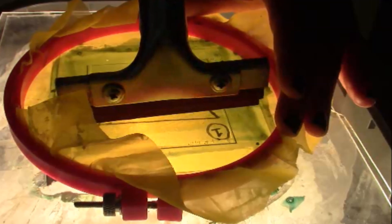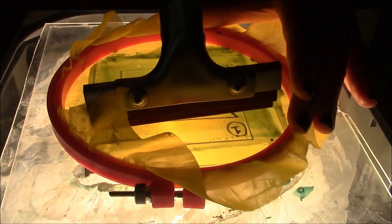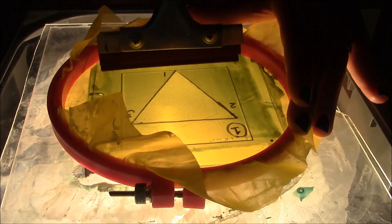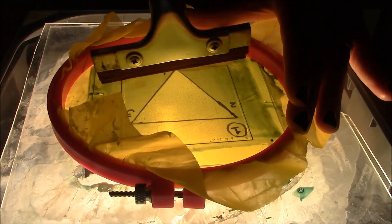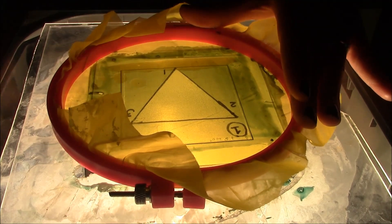Once all the ink is back at the top of the triangle, press down on the mesh until you feel contact with the glass plate through the screen and in one swift motion, pull all the ink across the screen. This technique is called doctor blading the ink.